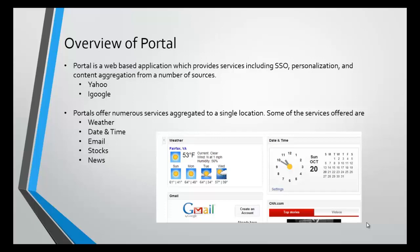As you can see in this screenshot, we have weather, CNN, and date and time. The content on a portal page is aggregated from a number of different sources, and CNN.com is probably aggregating from a different data source than date and time.